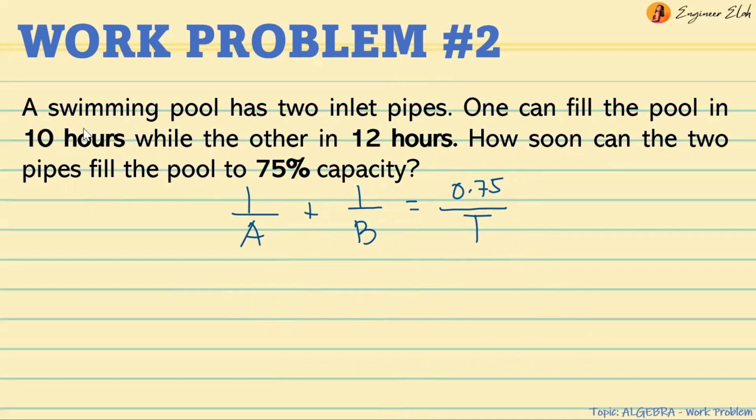We're given the hours for A and B, so we just need to find the total time that it would take both of them to do the job. Substitute: 1 over 10 plus 1 over 12 equals 0.75 over T. We can solve it algebraically, or it's easier if you use your calculator with shift solve. You will get that the T for both of them to complete 75% capacity is 4.09 hours.